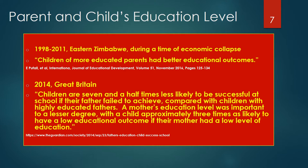An interesting study from Great Britain in 2014 demonstrated that the father's level of education is the strongest factor determining a child's future success at school. The report from the Office for National Statistics claims that children are seven and a half times less likely to be successful at school if their father failed to achieve an education compared with children with highly educated fathers. A mother's education level was important to a lesser degree, with a child approximately three times as likely to have a low educational outcome if the mother had a low level of education.